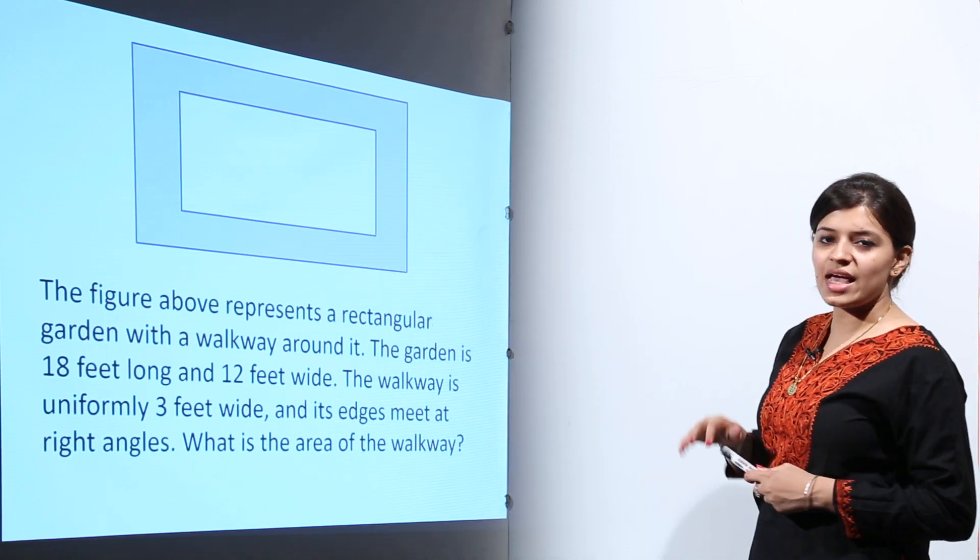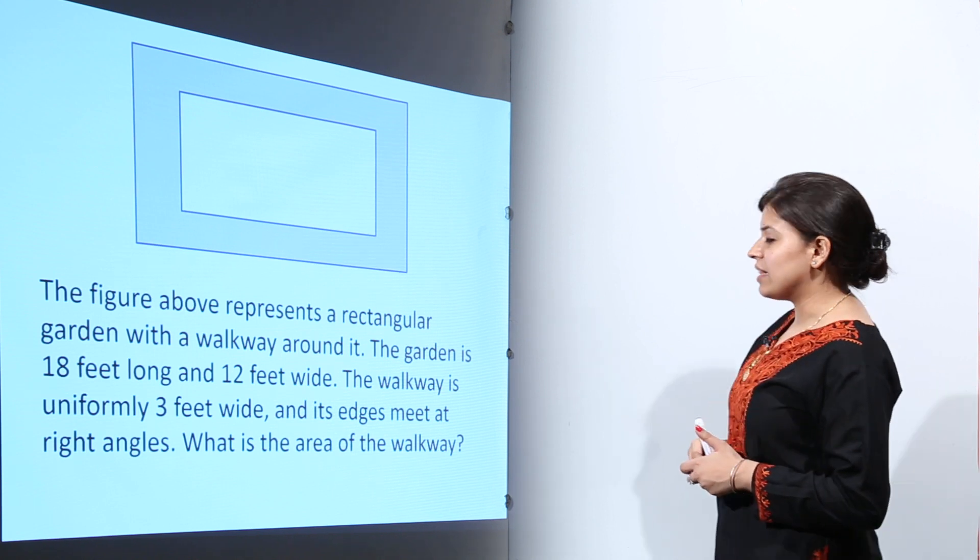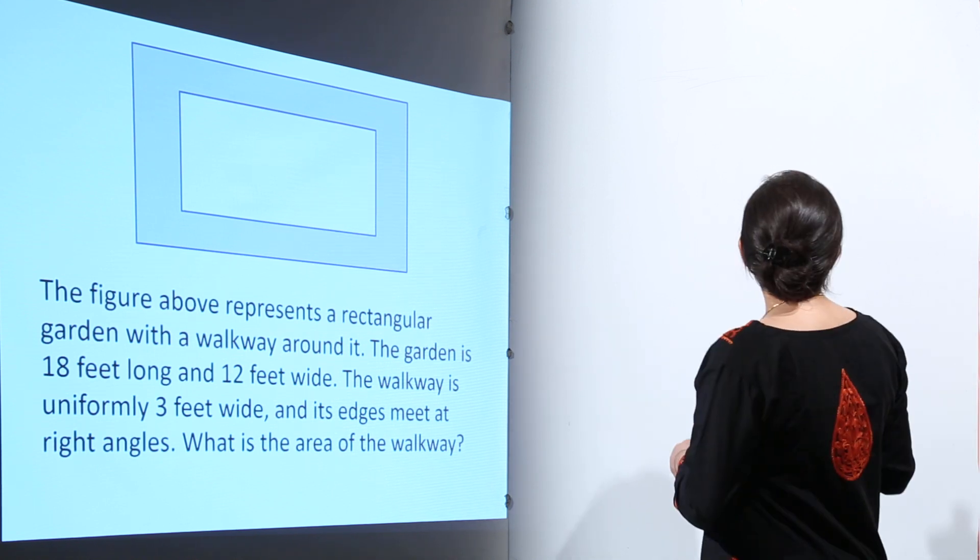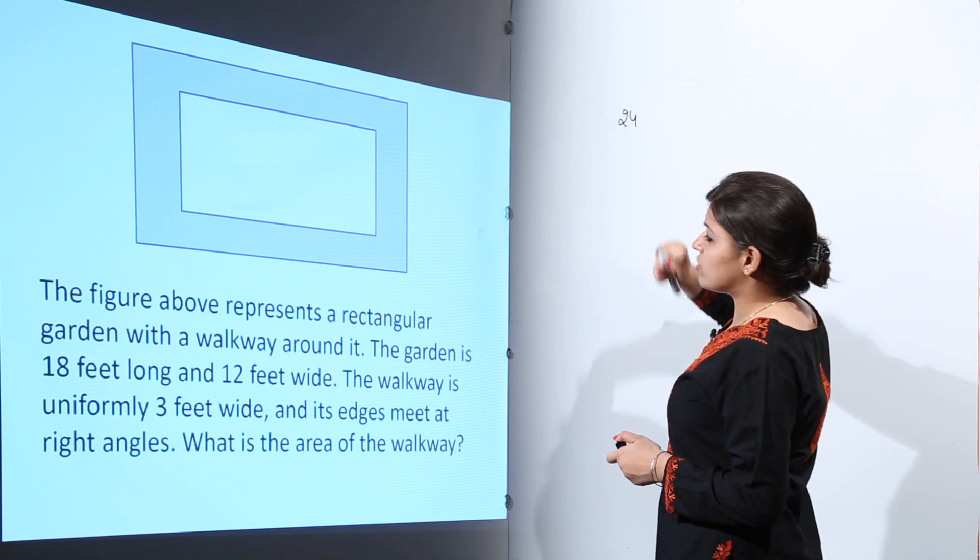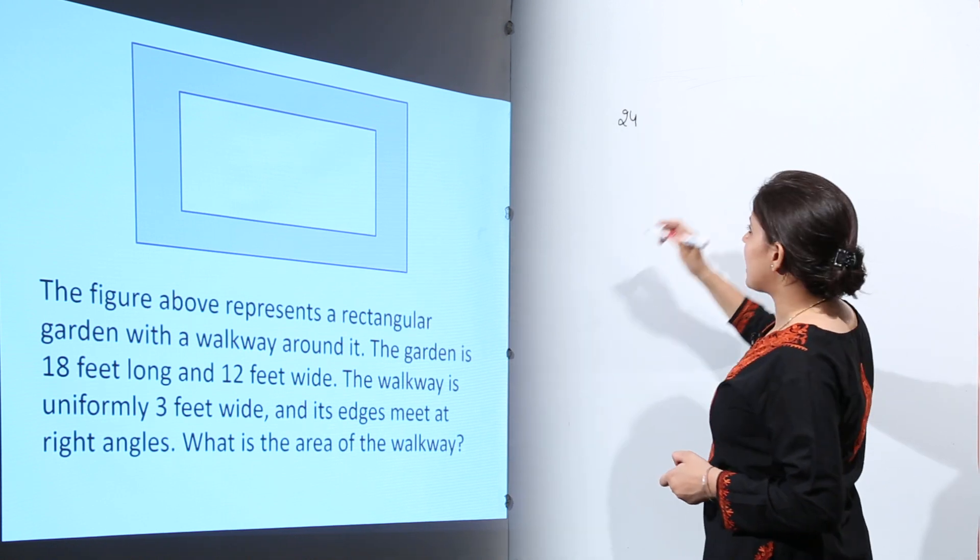So we can say that if we consider the external rectangle, the length will be 18 plus 6, that is 24, and the breadth will be 12 plus 6, that is 18.